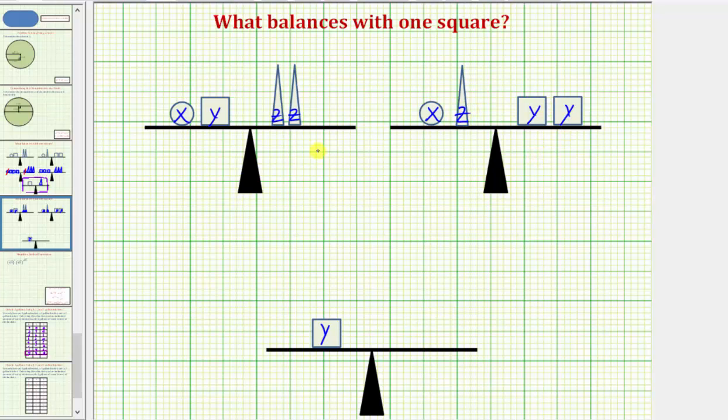And now we can form two equations using these first two scales. If a circle and a square balance with two triangles, that means that x plus y must equal 2z. And if one circle and one triangle balances with two squares, that would mean that x plus z must equal 2y.